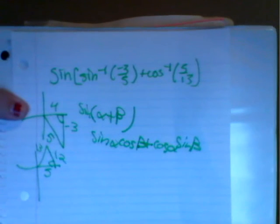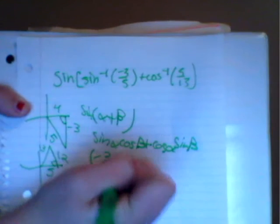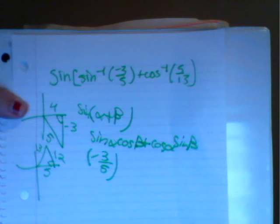So then we're going to fill it in. So the sine of alpha they gave us was negative 3 over 5, and the cosine of beta they gave us was 5 over 13.